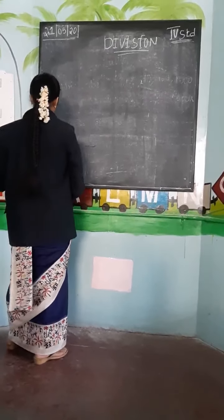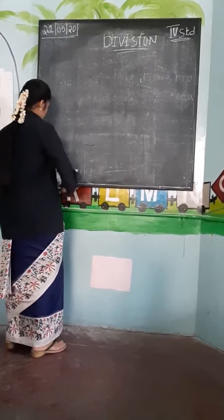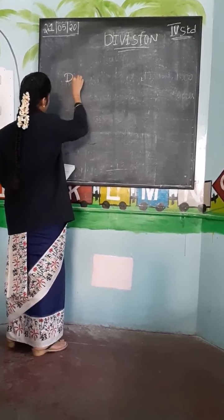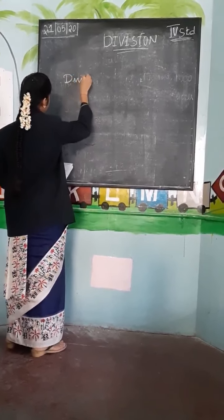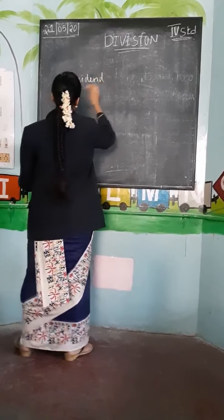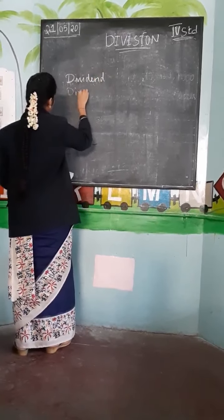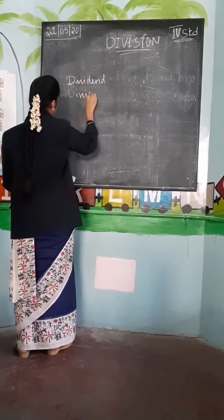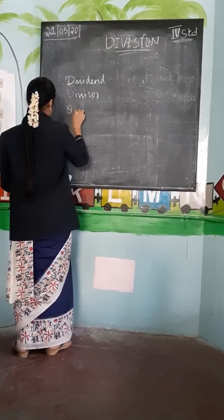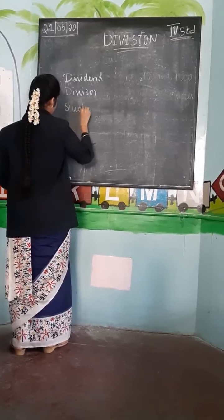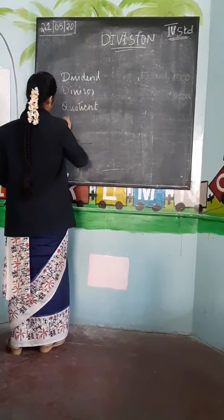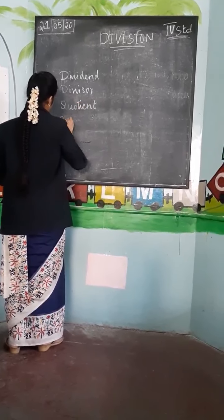In division, the main things you should know are: what is dividend, what is divisor, what is coefficient, and what is remainder.